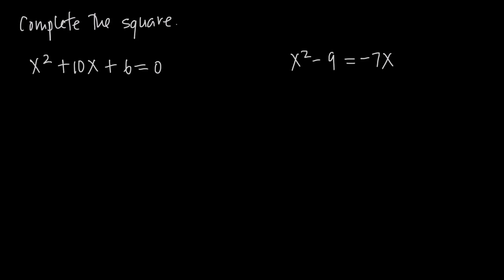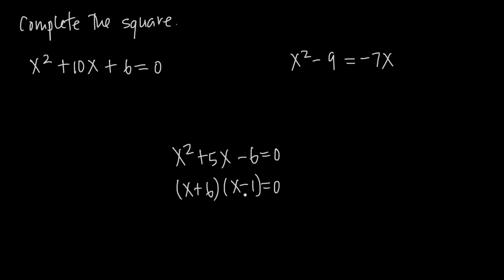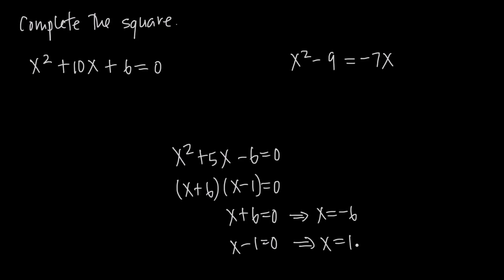This builds on our knowledge of the zero theorem. The zero theorem told us that if we had a trinomial like x squared plus 5x minus 6 equal to 0, we could factor it to get x plus 6 times x minus 1 equal to 0, then set each factor equal to 0 individually. We'd get x equals negative 6 or x equals positive 1 — the two values of x that make the equation true.